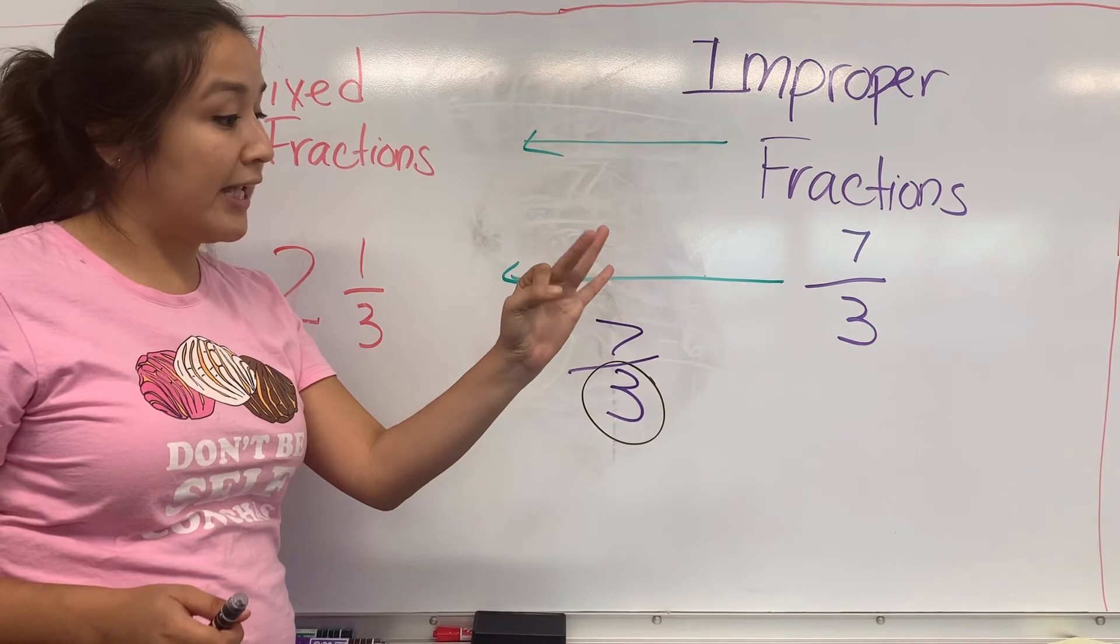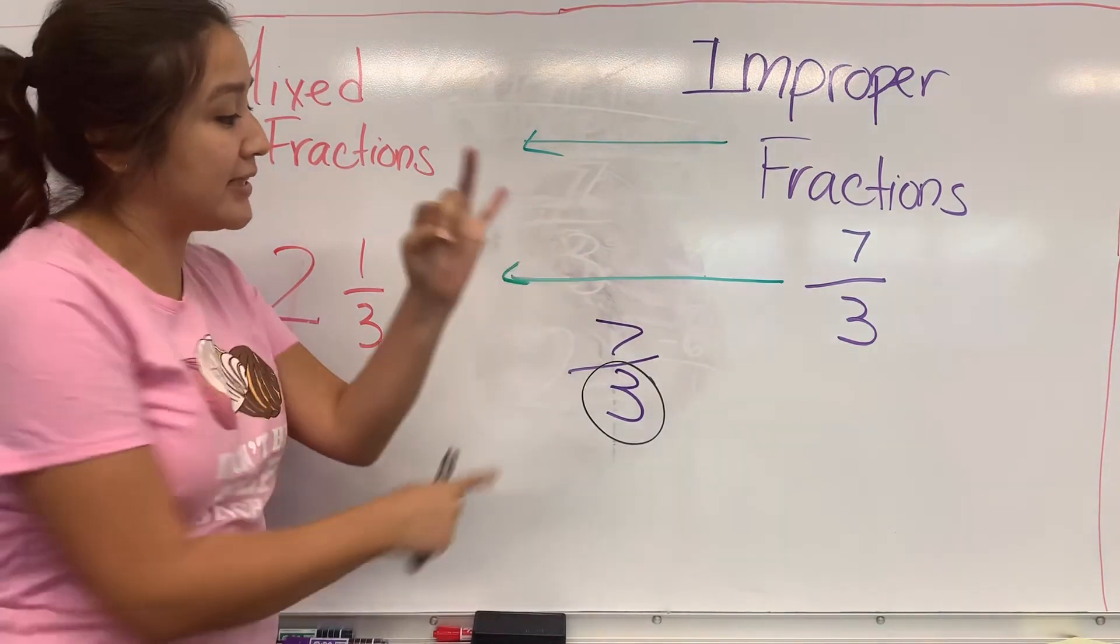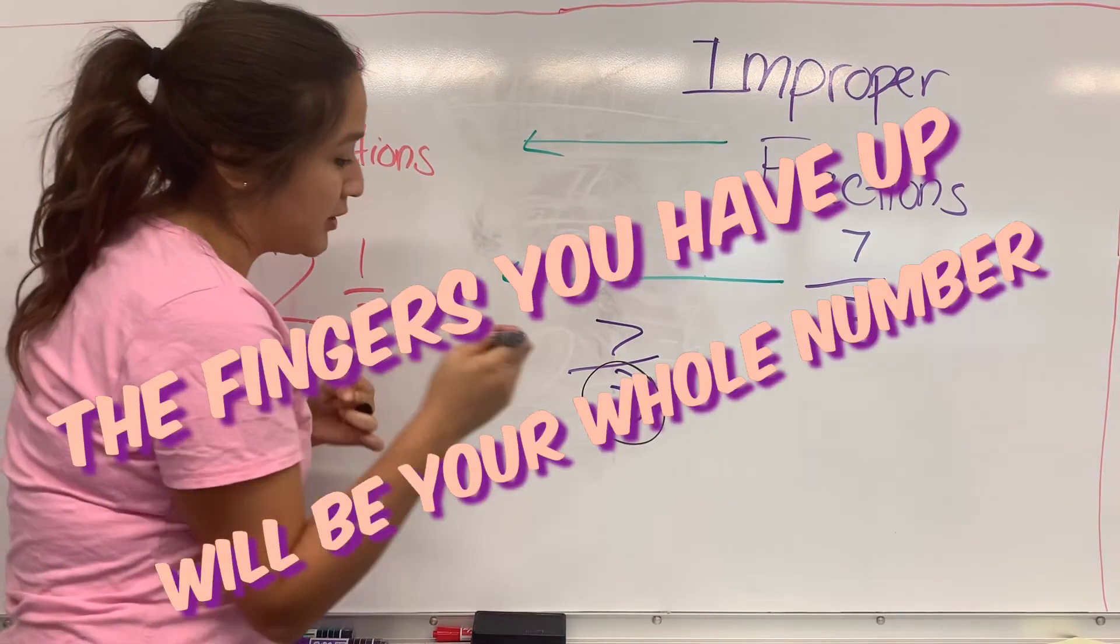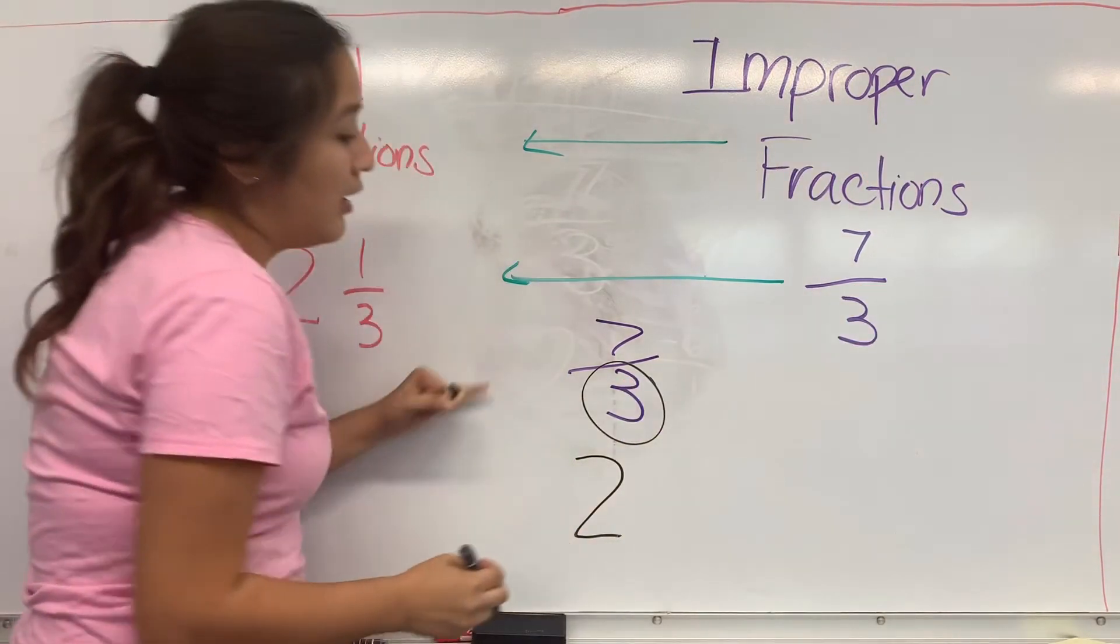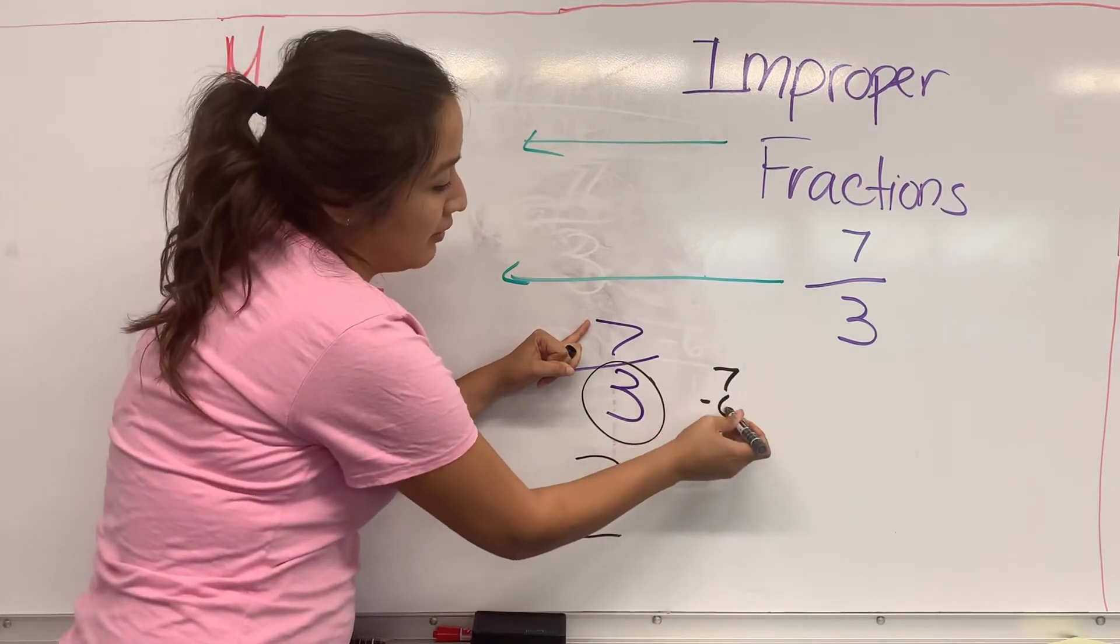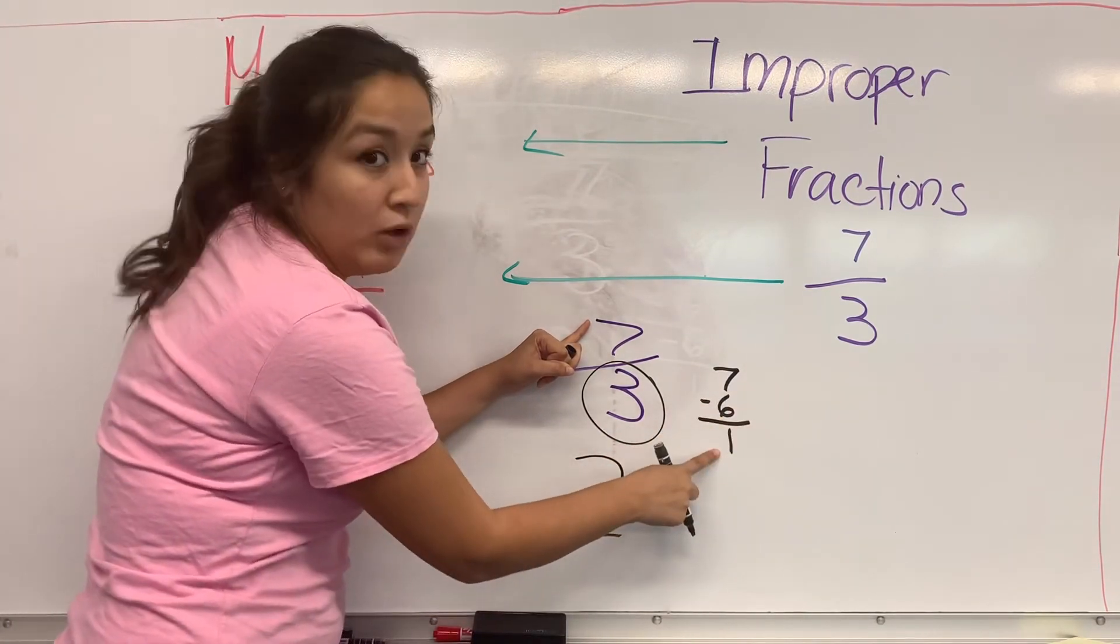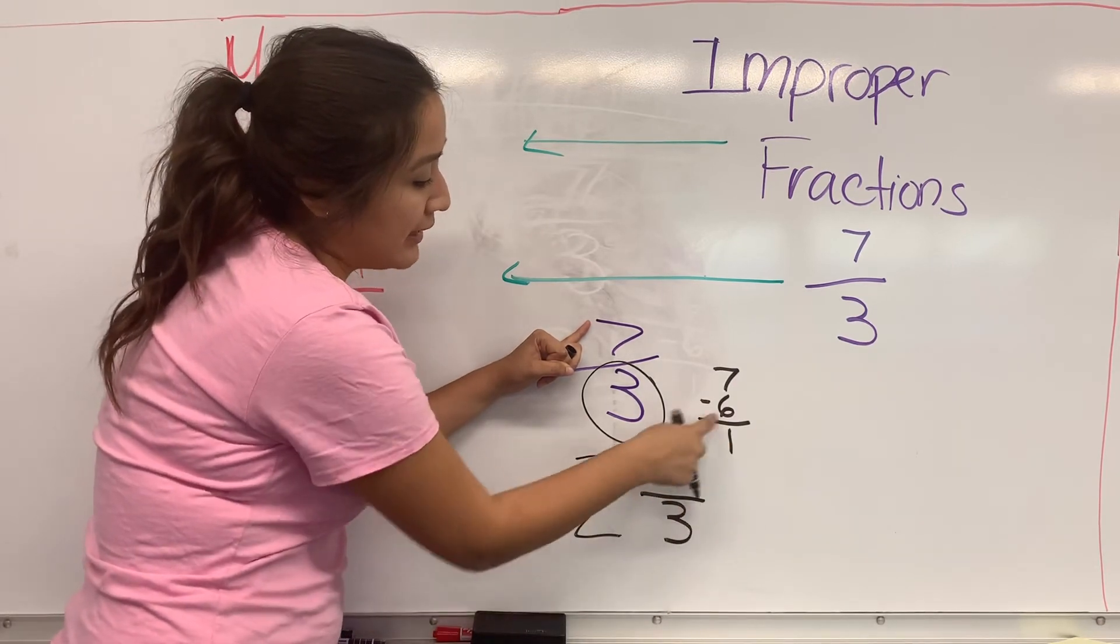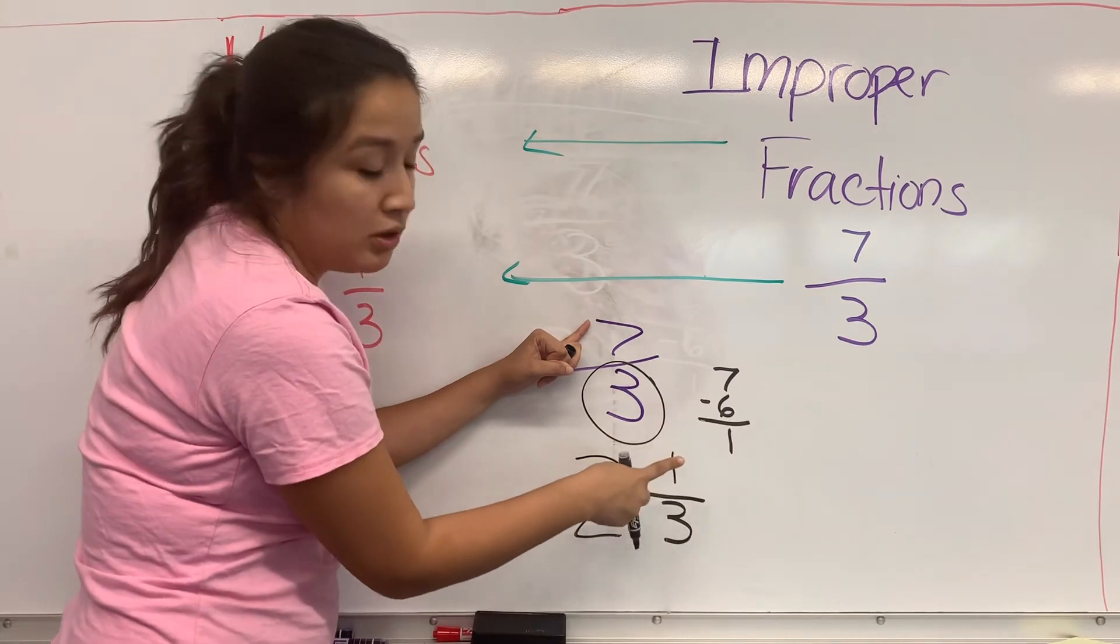I have two fingers up, so I'm going to write 2. I had 7 here, and I had to stop at 6 at my skip counting. That leaves me with 1, and then I keep my denominator here. Whatever is left over becomes your new numerator.